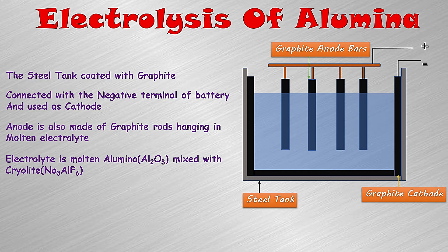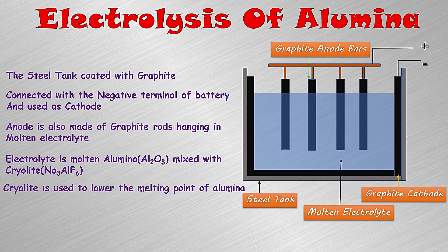The electrolyte solution contains aluminium oxide (alumina), which is mixed with another ore of aluminium known as cryolite — formula Na₃AlF₆. The melting point of alumina is very high, so cryolite is mixed with it to lower its melting point. Cryolite is basically used to lower the melting point of the main alumina ore.